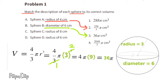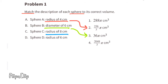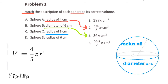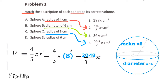Sphere C has a radius of 8 centimeters, so we substitute R with 8. 4 times 8 to the third power equals 2048. Sphere C matches volume 4.